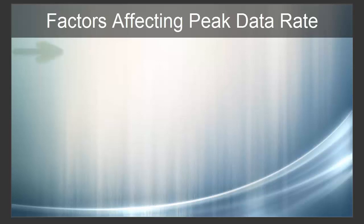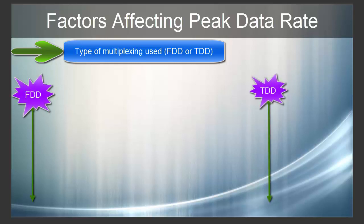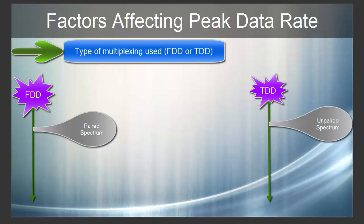The second factor is the type of multiplexing used. LTE supports both types of multiplexing — FDD as well as TDD. FDD is also called paired spectrum, meaning when we say 20 MHz FDD bandwidth, it has a pair of 20 MHz: 20 MHz for downlink and 20 MHz for uplink. TDD is called unpaired spectrum, meaning when we say 20 MHz TDD bandwidth, it has only 20 MHz shared between uplink and downlink. FDD has the same bandwidth in downlink and uplink, so it is said to have symmetric bandwidth.